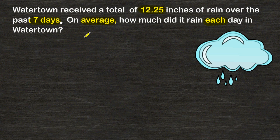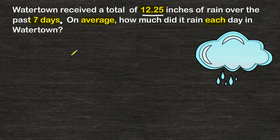In this problem, it gives us a total of 12.25 inches over the span of 7 days. It does not say how much it rained each day — it just gives us a total amount over that 7-day period. And we have to calculate how much rain it averaged each day during that 7-day span.